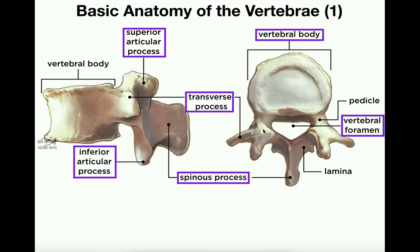Pointing out laterally are the transverse processes. They take different shapes in each class of vertebrae, but point more or less laterally. There's one on the right side and one on the left. The hole in the center is called the vertebral foramen — every single vertebra has one, and it's the space where the spinal cord runs down.